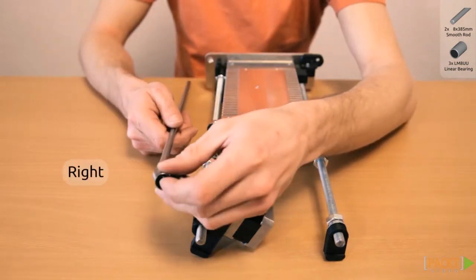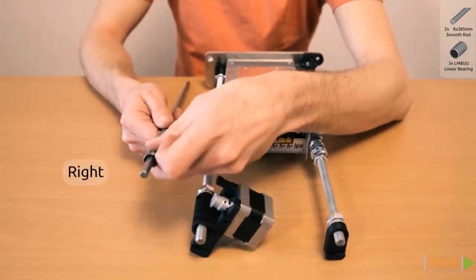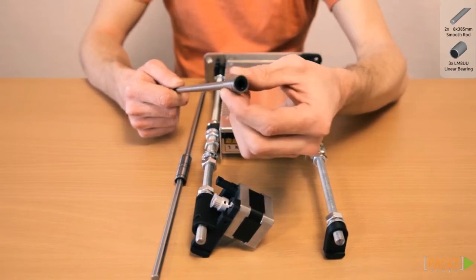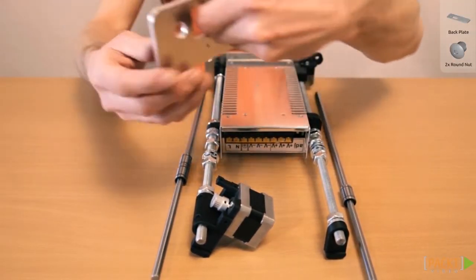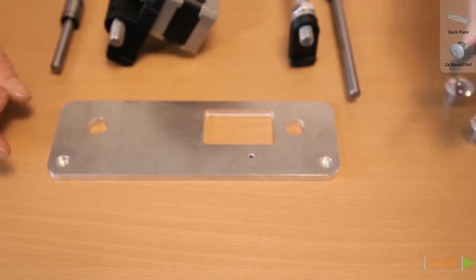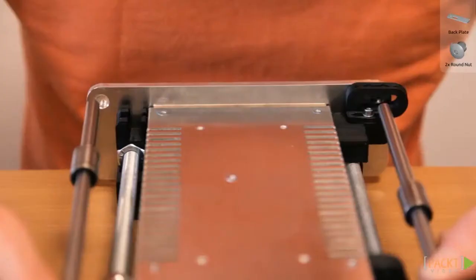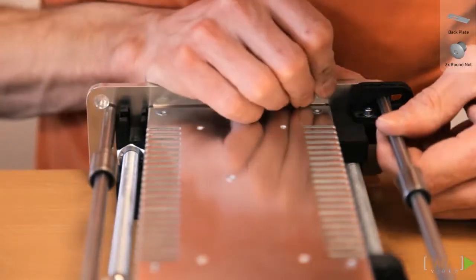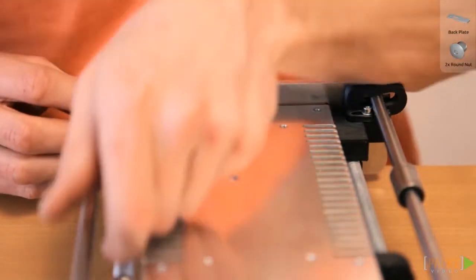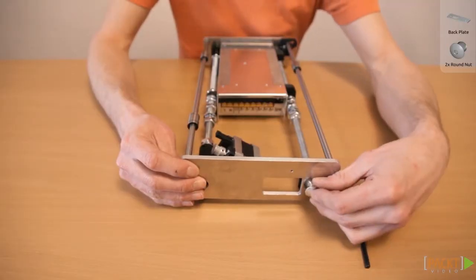Place 2 linear bearings on the right hand rod and 1 linear bearing on the left hand rod. Slide the 2 linear rods into the top holes of the rear plate. Insert the other end into the hole of the front plate. Mount the rear plate with the rounded nuts.